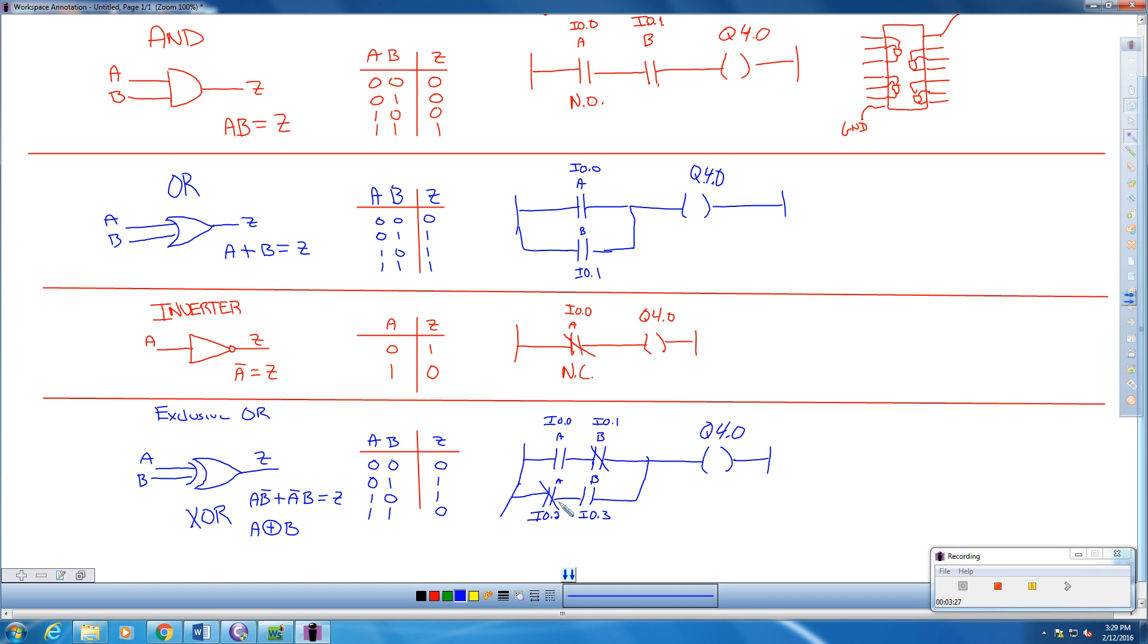This one's normally closed, which means what's going to turn this path on is if B goes to logic high and turns on. Then this path is lit up, not this one. The other scenario is B's already normally closed. So all we have to do is close A because A is normally open.